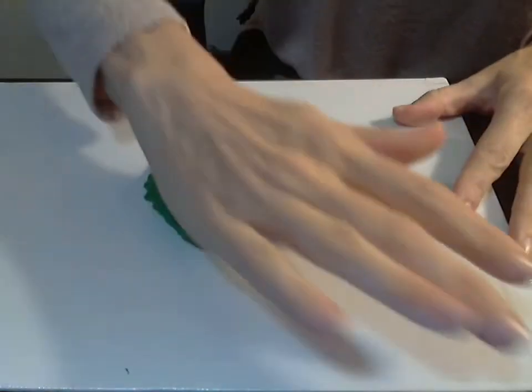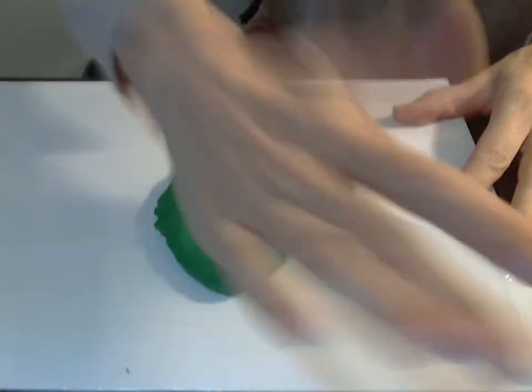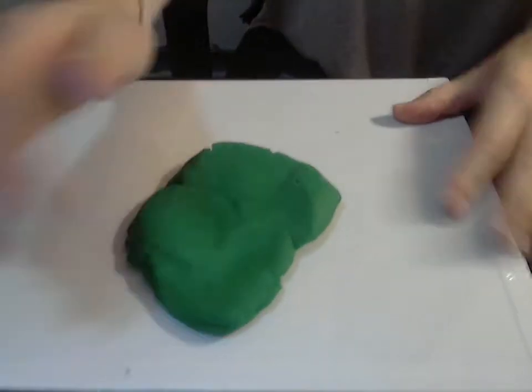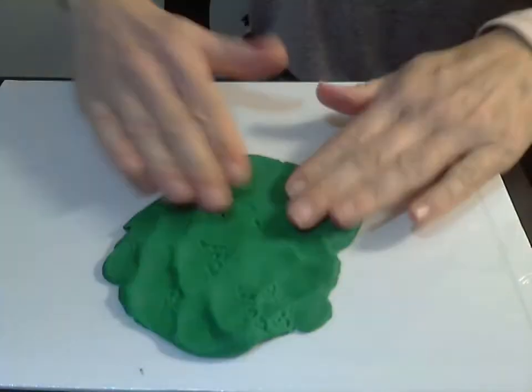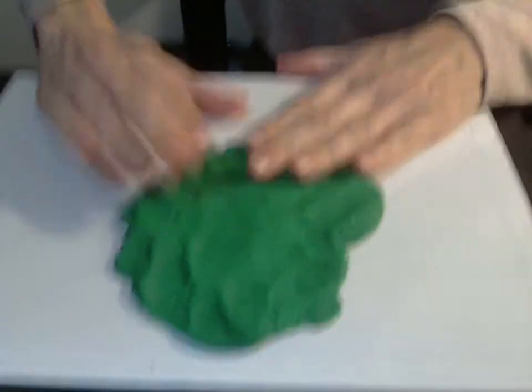So what you're going to do is have your student work with the Play-Doh and flatten it out. Try to get it as thin as you can without having holes in it.